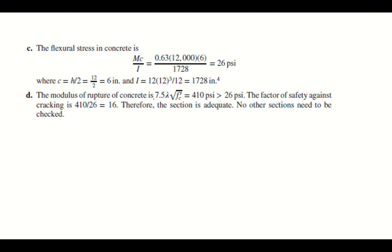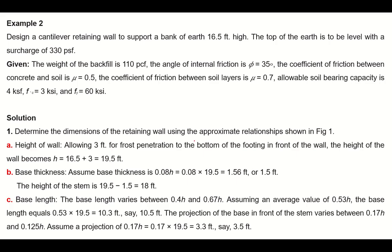The modulus of rupture of concrete is 7.5 times lambda times sqrt(f'c). With lambda equal to 1 for normal weight concrete and f'c equal to 3000 psi, the modulus of rupture equals 410 psi, which is much larger than the flexural stress in concrete. The factor of safety against cracking is 16, so the section is adequate and no other sections need to be checked. In the next video, we will discuss designing a cantilever retaining wall in detail.